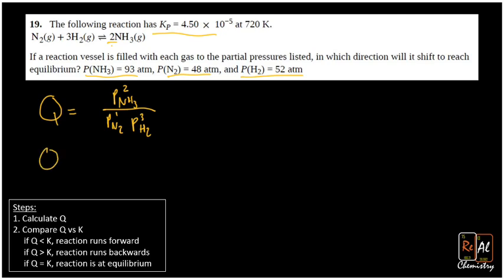Now let's actually calculate those values. The pressure of ammonia squared would be 93 squared, divided by the pressure of nitrogen to the first power times the pressure of hydrogen to the third power. And when we compute that, we get 0.00128.